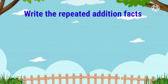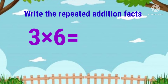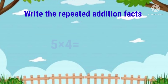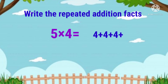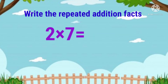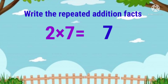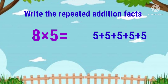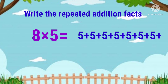Write the repeated addition facts. 3 into 6 is equal to 6 plus 6 plus 6. 5 into 4 is equal to 4 plus 4 plus 4 plus 4 plus 4. 2 into 7 is equal to 7 plus 7. 8 into 5 is equal to 5 plus 5 plus 5 plus 5 plus 5 plus 5 plus 5 plus 5.